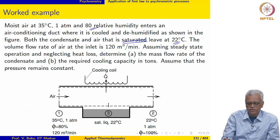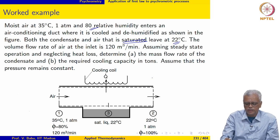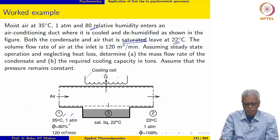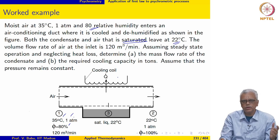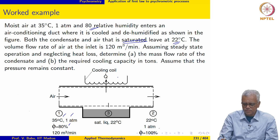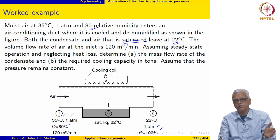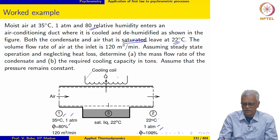The scenario shows a cooling coil where air enters the duct at 35°C, 1 atmosphere, 80% relative humidity, and a volume flow rate of 120 m³ per minute. It leaves saturated, meaning φ = 100%, at the same mixture pressure of 1 atmosphere and a temperature of 22°C.